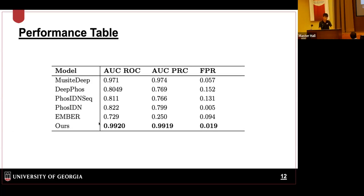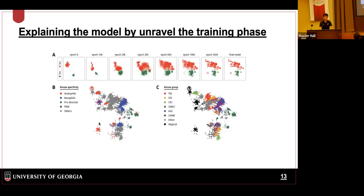After showing our model is great, we want to know what it actually learned during training. Previously, when you want to know such information, the most obvious approach is to draw a UMAP and project things into two dimensions to see how they cluster. But UMAP of the final model only shows what was finally learned, not how the model gradually arrived at its predictions. So we saved different checkpoints at different training steps and performed UMAP across time to see how the clustering actually changed.